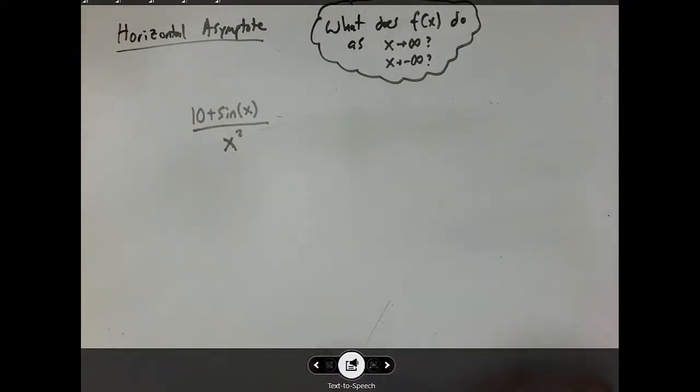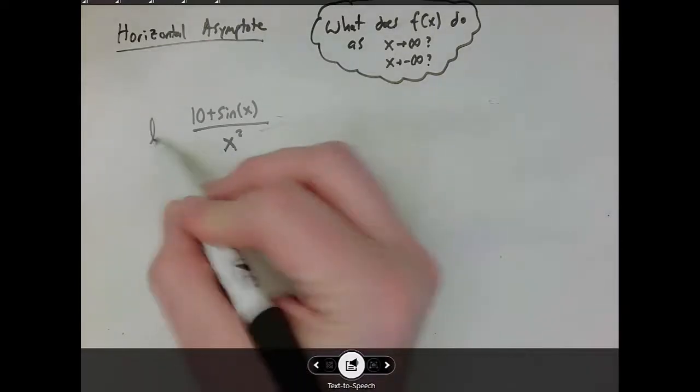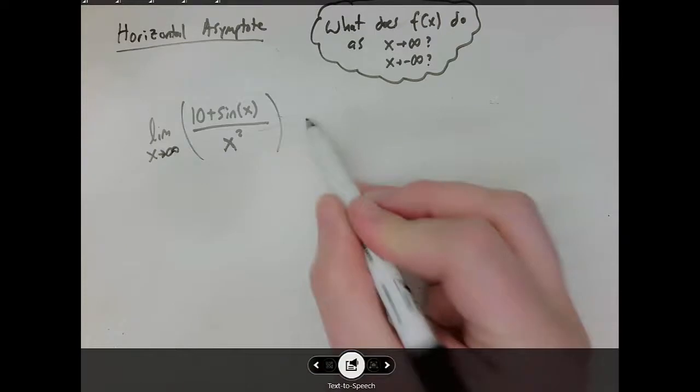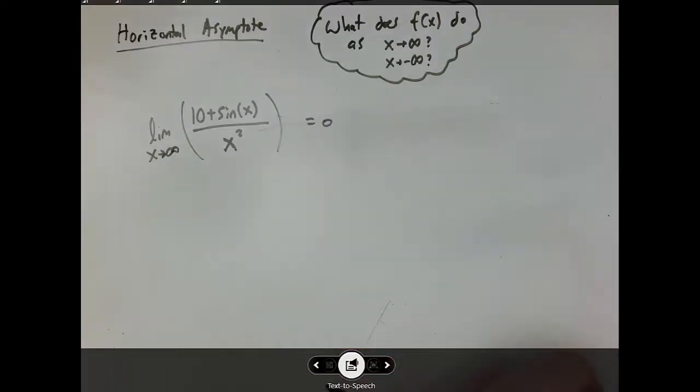What about something like this? So let's use your own intuition. Imagine what is probably going to happen with this function as x approaches infinity. If you predicted that this function is also approaching zero, so limit x approaches infinity of this entire thing equals zero, then your guess would be right.